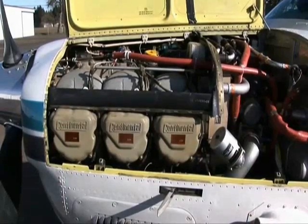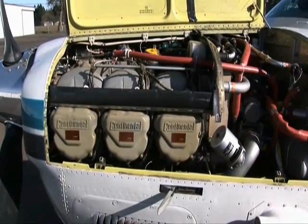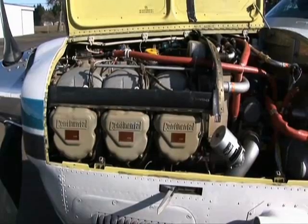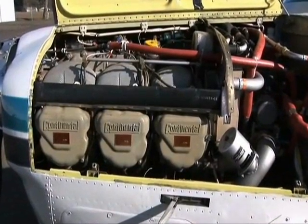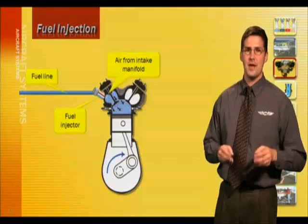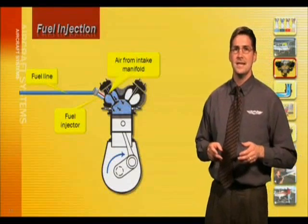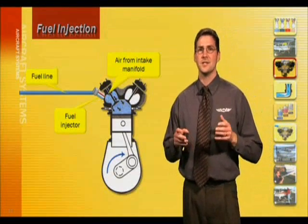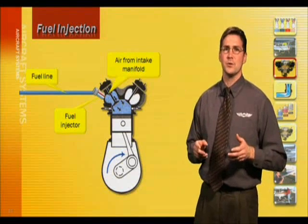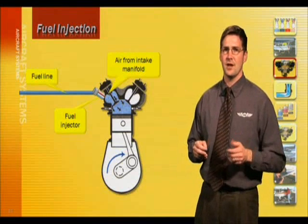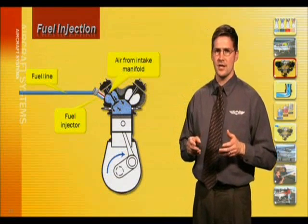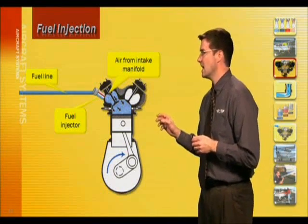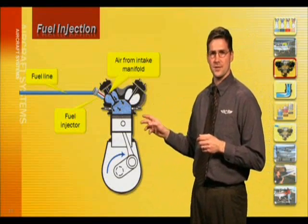If your aircraft has fuel injection, there will be no carburetor in the engine and the fuel will be directly injected into each engine cylinder. On fuel-injected engines, fuel is injected directly into the cylinders rather than being vaporized in a carburetor. Since the cylinder is hot, there is not much danger of icing when the fuel combines with intake air and vaporizes. Both fuel injection and carburetor systems have their own considerations for icing conditions. Let's cover the carbureted engine first.